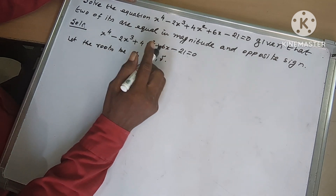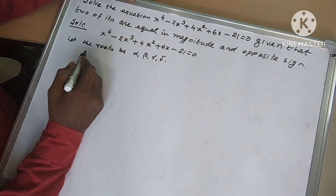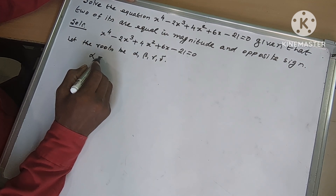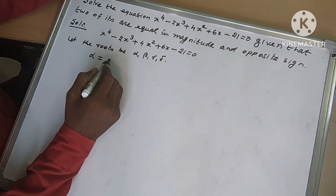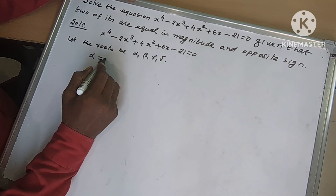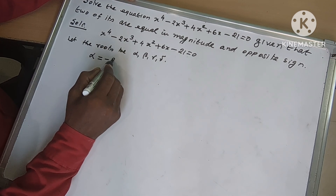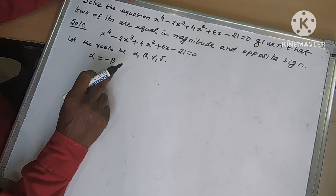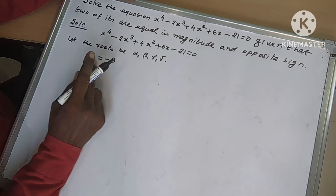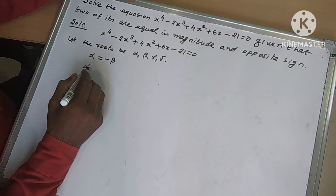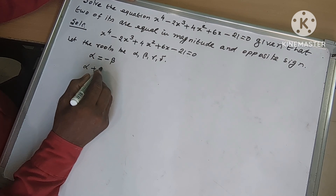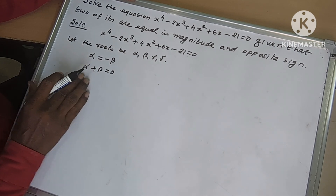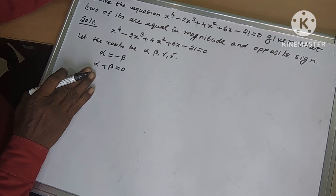But here, according to the given condition, 2 roots — we take alpha and beta — they are equal but on opposite sides. Alpha equals minus beta. So alpha plus beta equals 0. So this is one condition we take.